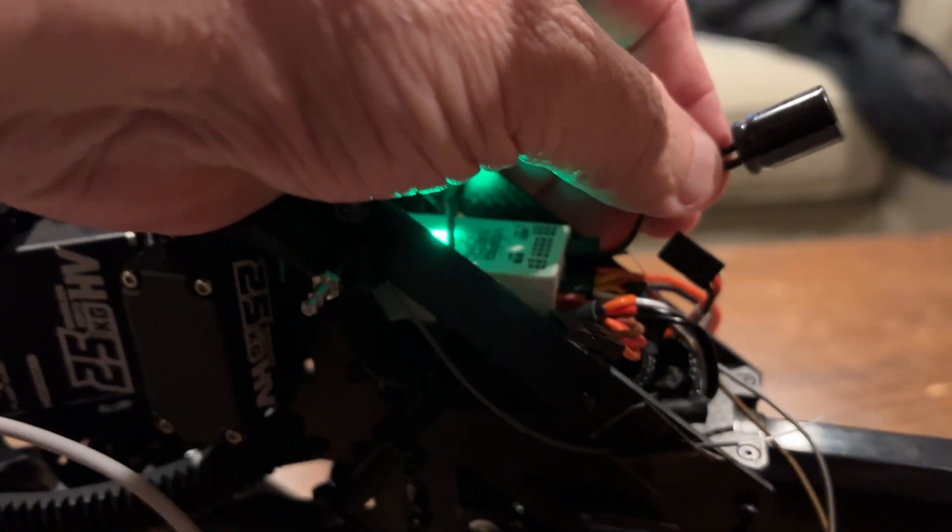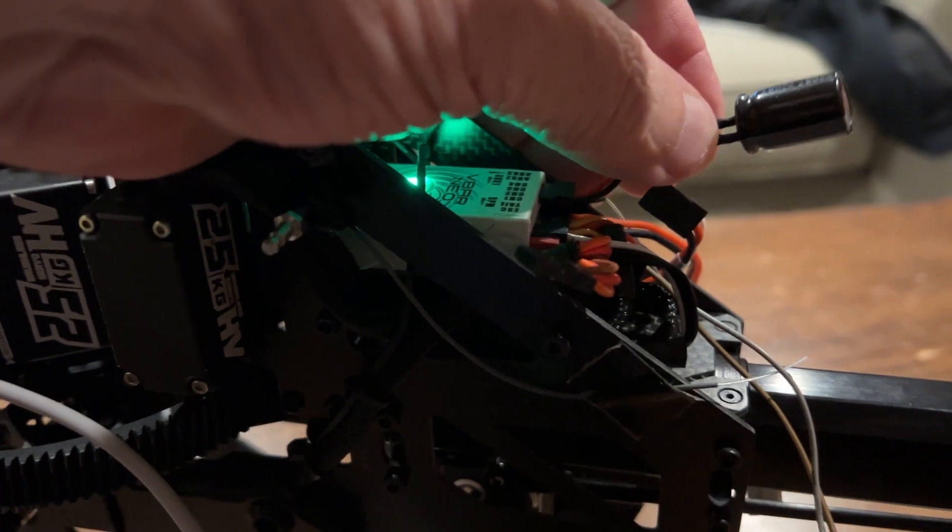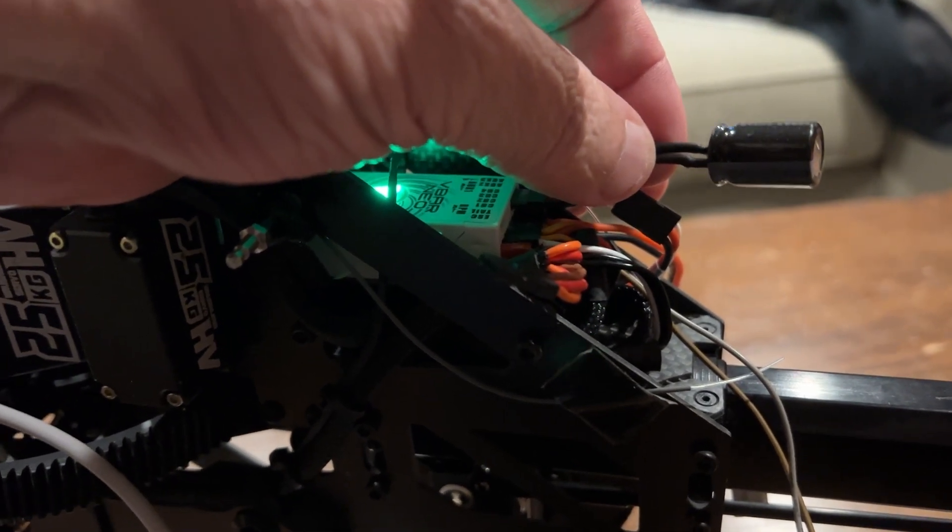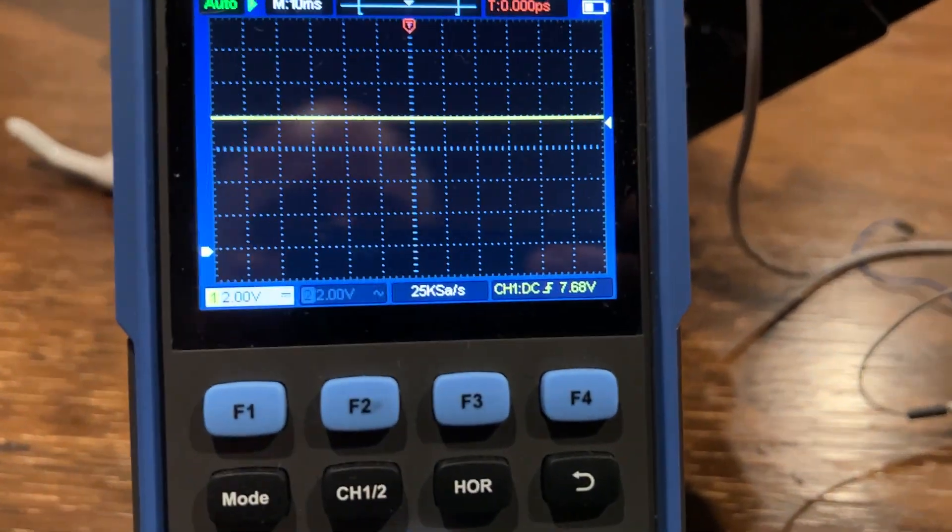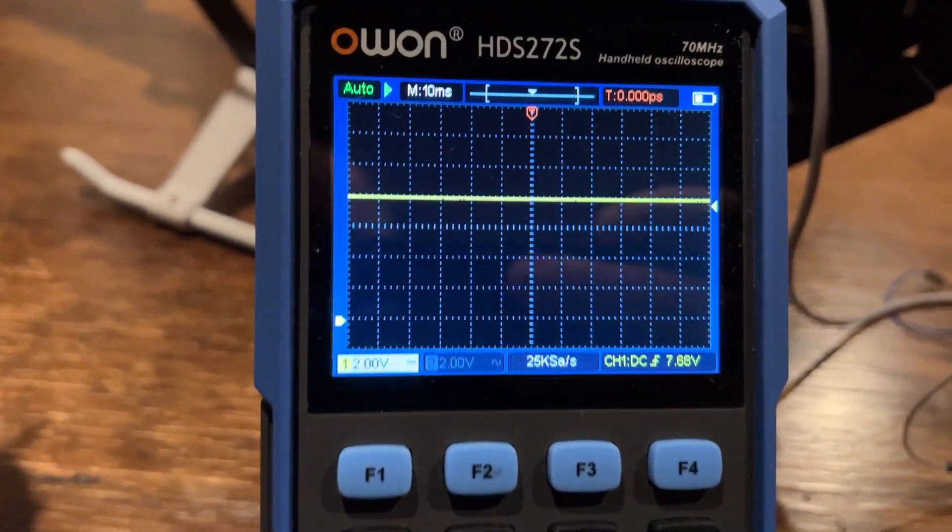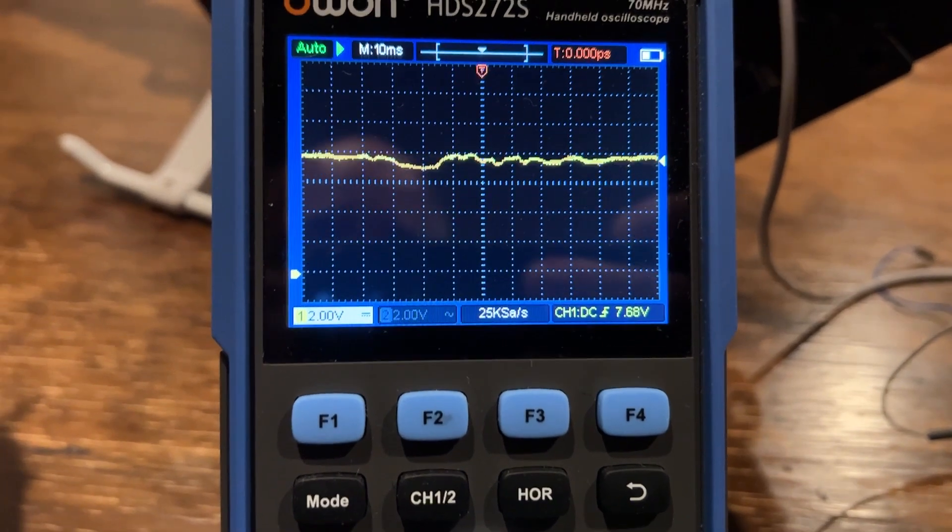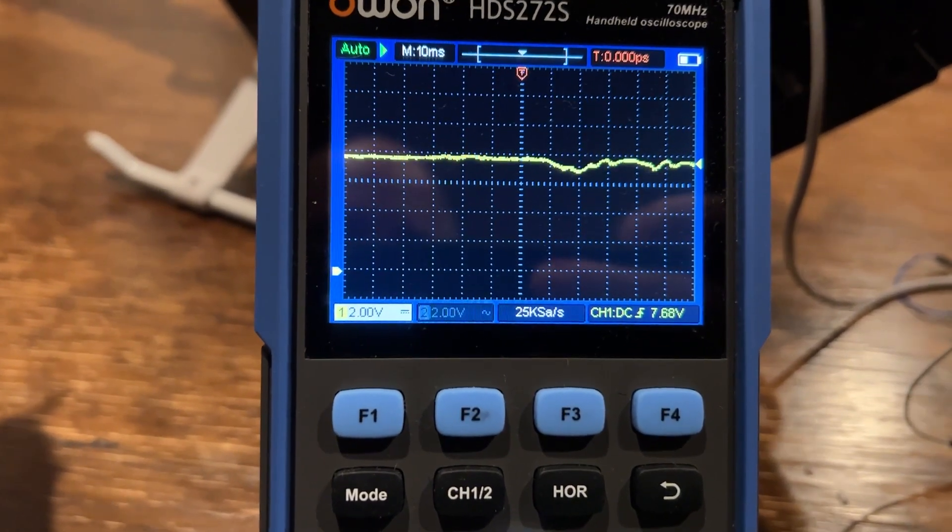Okay, the next test is without the X-Guard Plus but with the capacitor. So now we have the same voltage and we're gonna try the same thing. As you can see, the capacitor will help slightly.